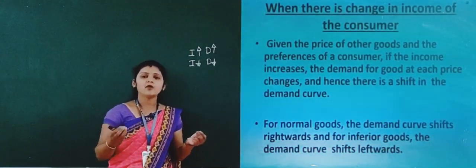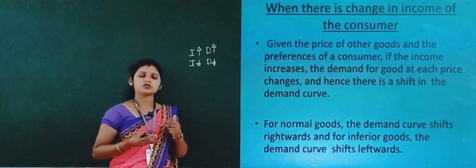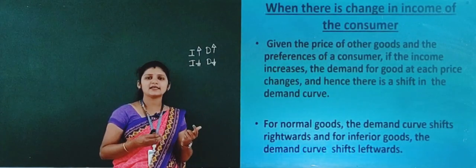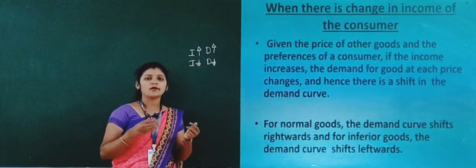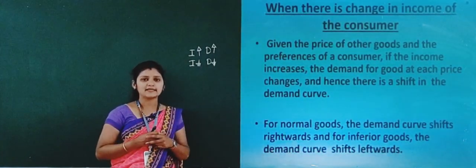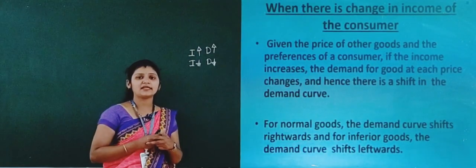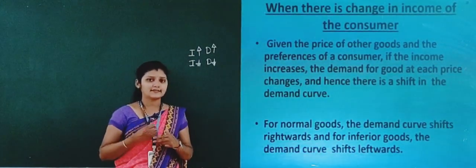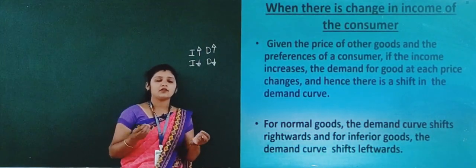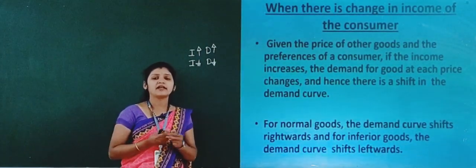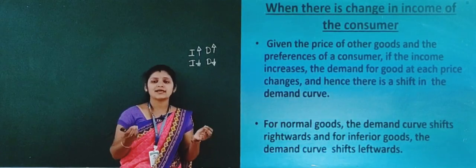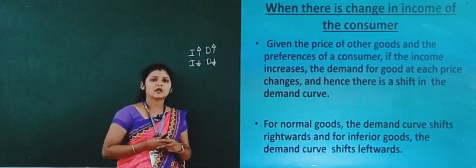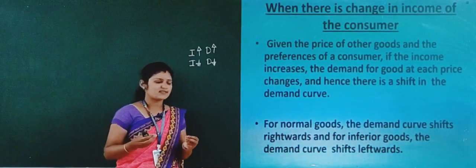Normal goods are those goods where when the income of the consumer increases, demand for the normal good also increases, and when income decreases, demand for the normal good also decreases. Examples of normal goods are daily usable goods like vegetables, fruits, and clothes.